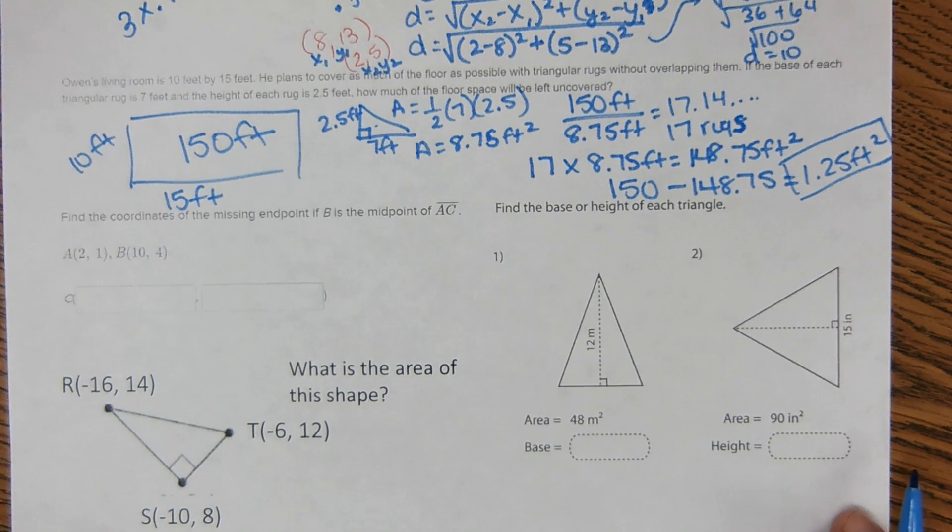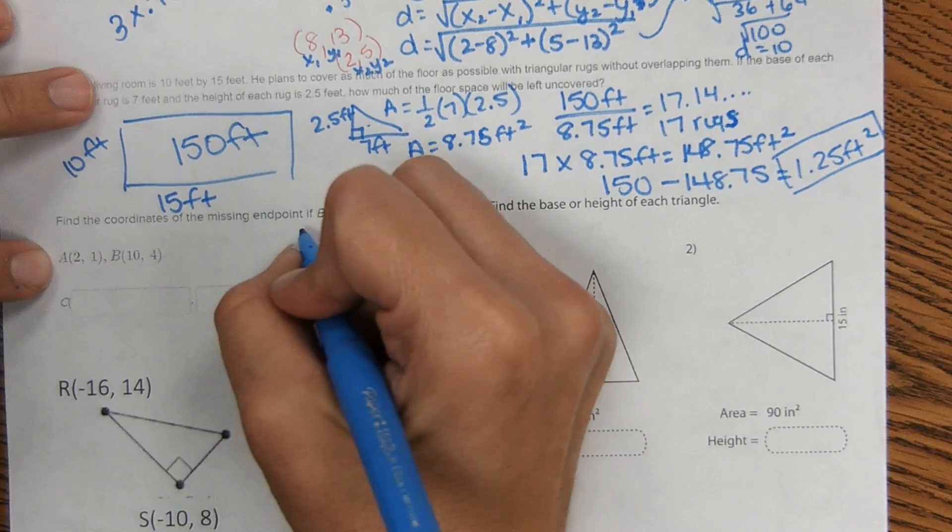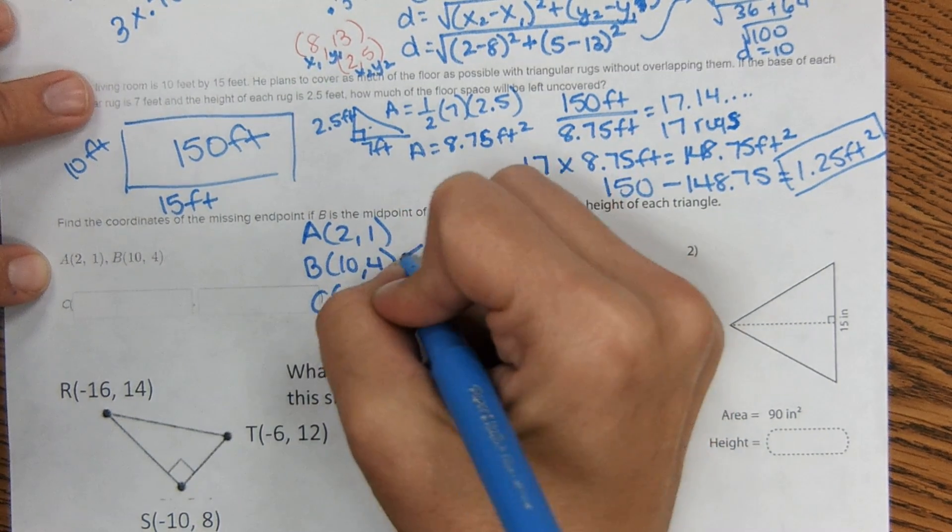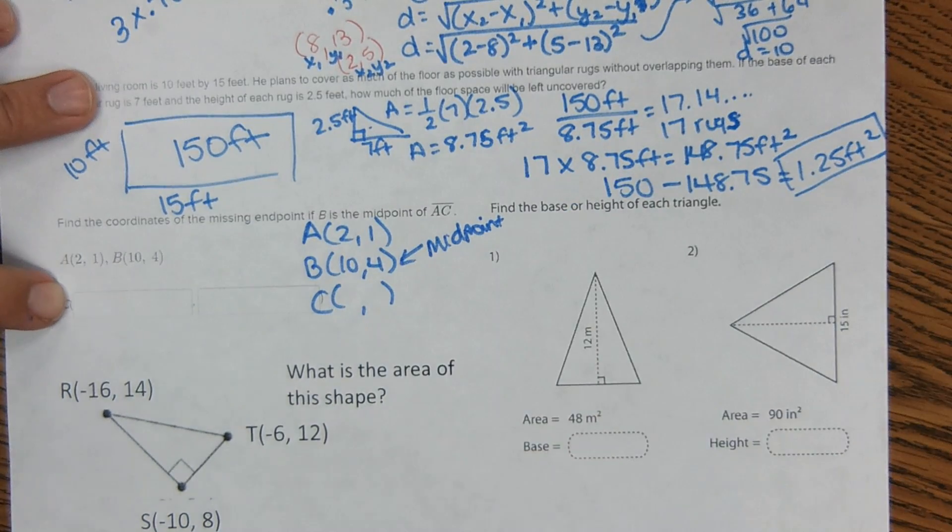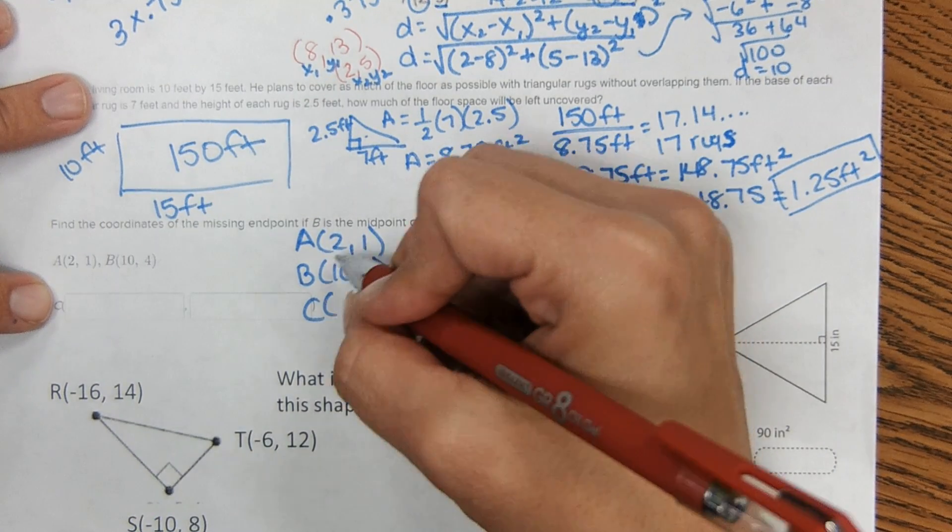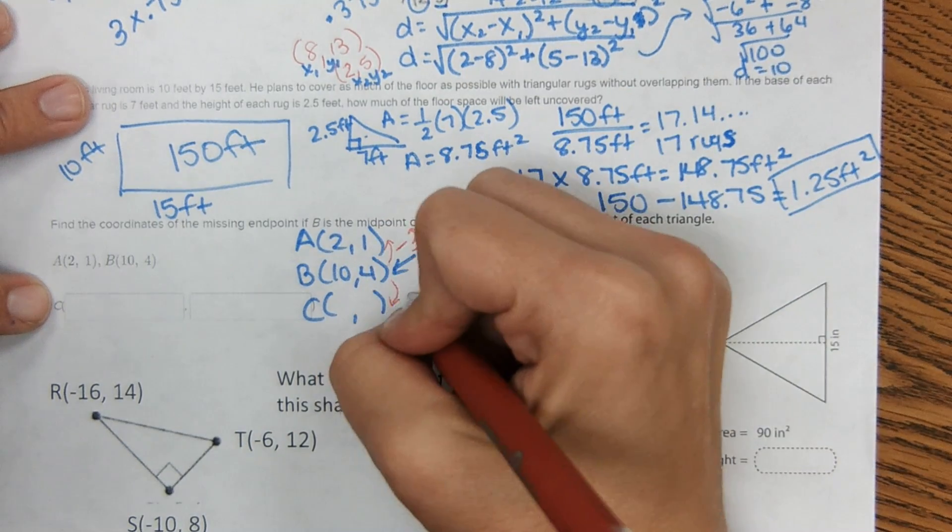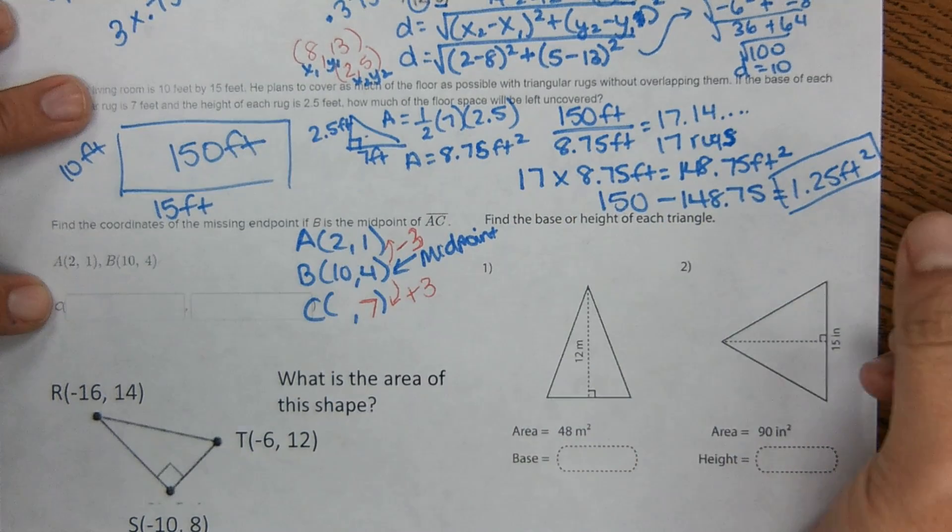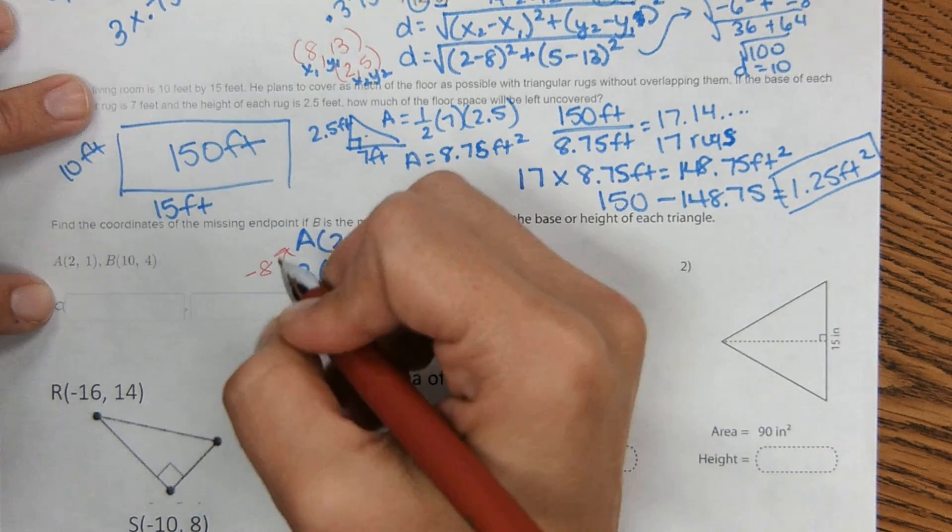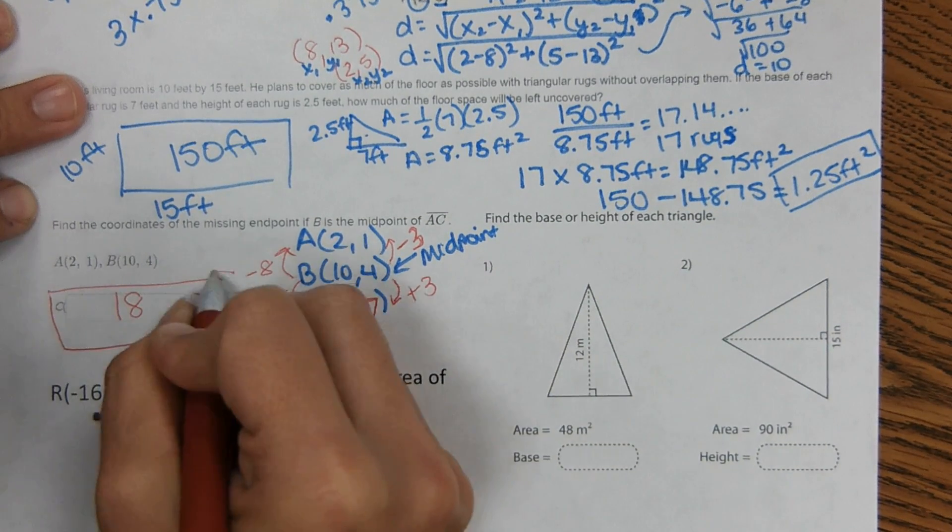Okay next one. Find the coordinates of the missing endpoint if B is the midpoint of AC. Okay so A is at 2, 1, B is at 10, 4. It wants to know C if B is the midpoint of AC. So this is how we set it up when we learned it and then we just look at the distance here from the x's and the y's. So 4 to 1 would be minus 3, so therefore to get to this number we would add 3 to get 7. And then here 10 to 2 would be minus 8, so we just add 8 to get this number which would be 18. So our coordinates are 18, 7.